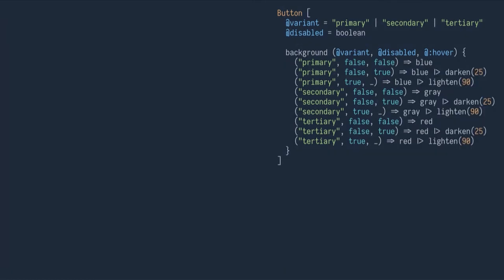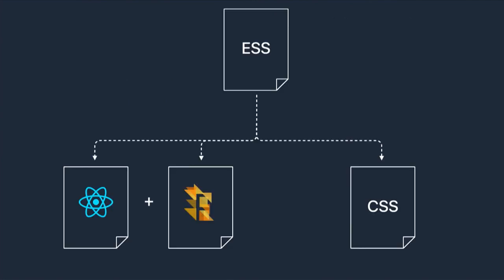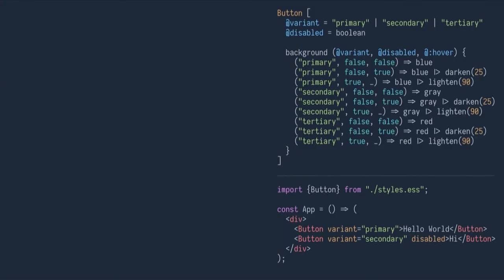Now you're thinking — what is this imaginary language? I have to admit it's not totally imaginary; it's something I've been working on the past few weeks. I'm calling it Element Style Sheets, or ESS for short. It's still rather experimental with a ton of work to do, but I can show some cool things it can do. Like React CSS Components, ESS can generate React components. At build time, the compiler takes our ESS file and generates a React component JavaScript file as well as a Flow type definition, and also outputs a single static CSS file with all the styles.